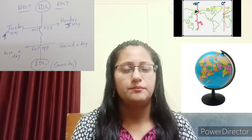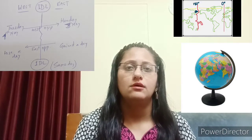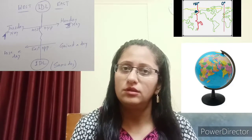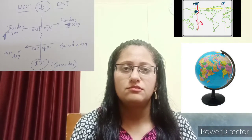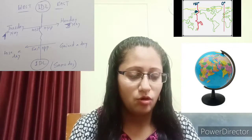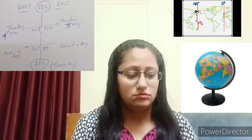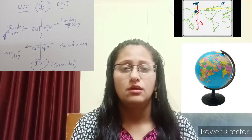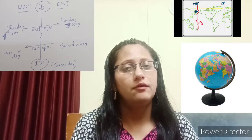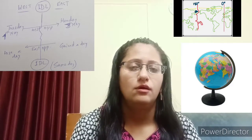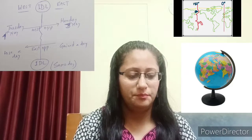Similarly, a traveler passing from west to east will experience a different calendar date. For example, if they are traveling on the 4th of May, which is a Tuesday, they will experience Monday on the east side, meaning the date becomes the 3rd of May.